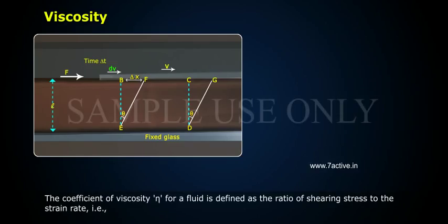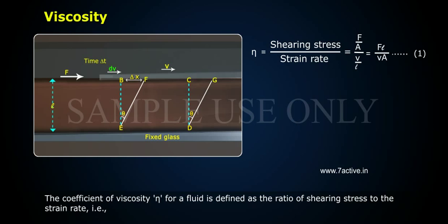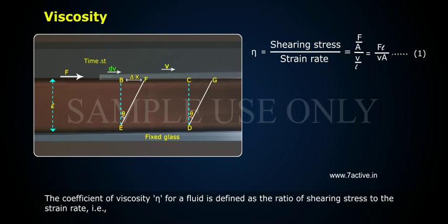The coefficient of viscosity, eta, for a fluid is defined as the ratio of shearing stress to the strain rate. That is, eta equals shearing stress divided by strain rate, which equals (F/A) divided by (v/l), equals Fl divided by vA. This is Equation 1.